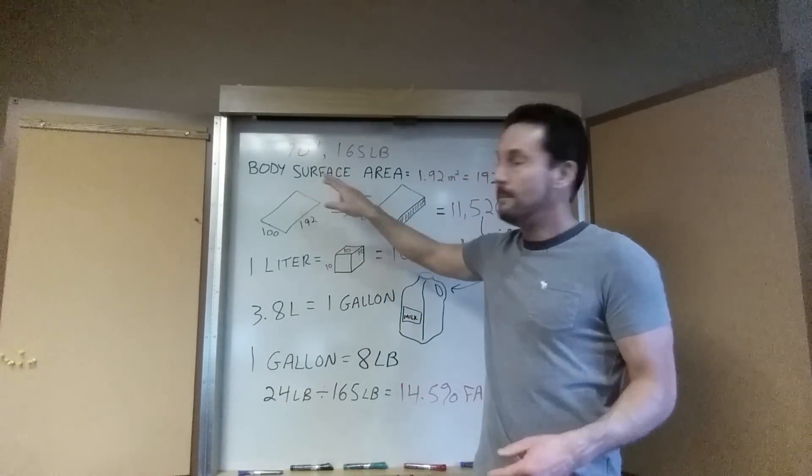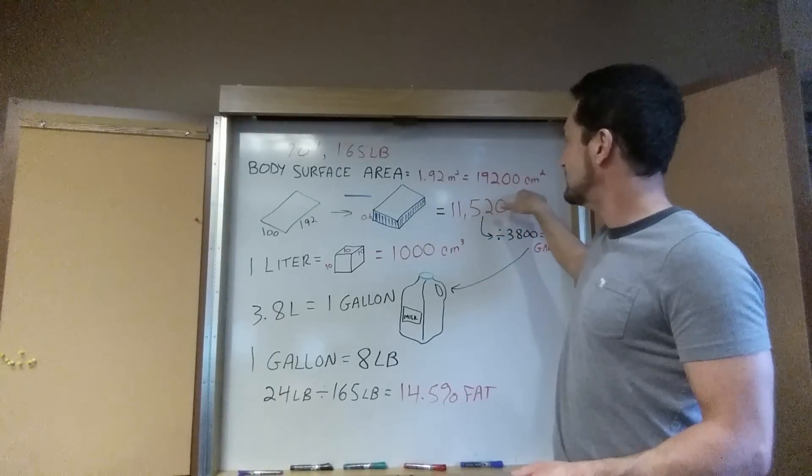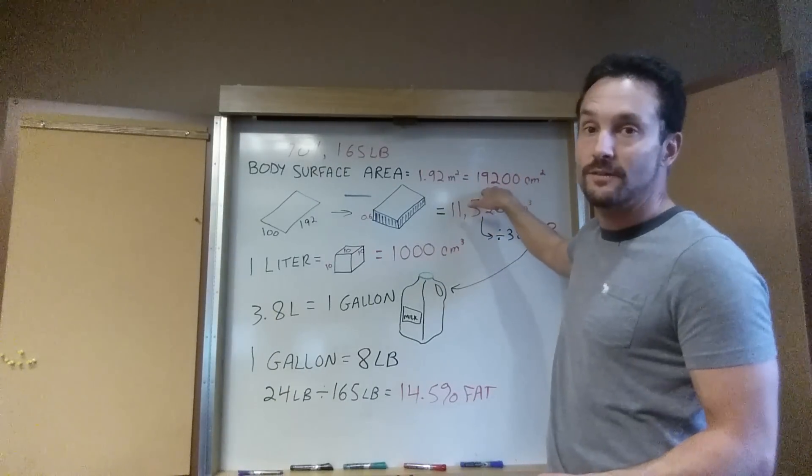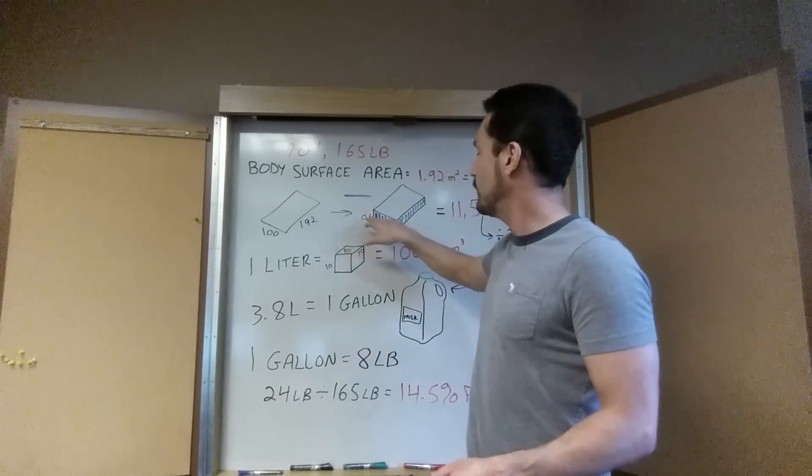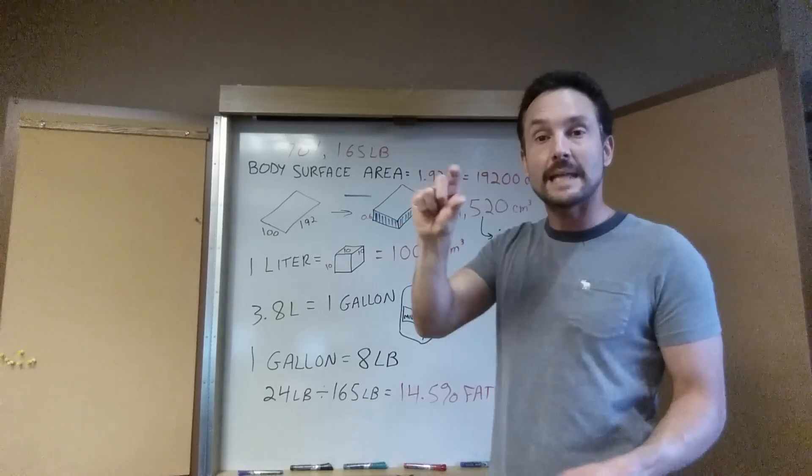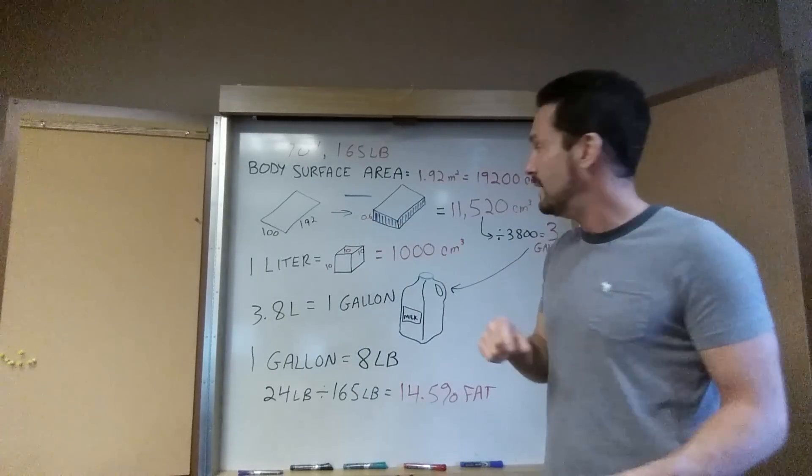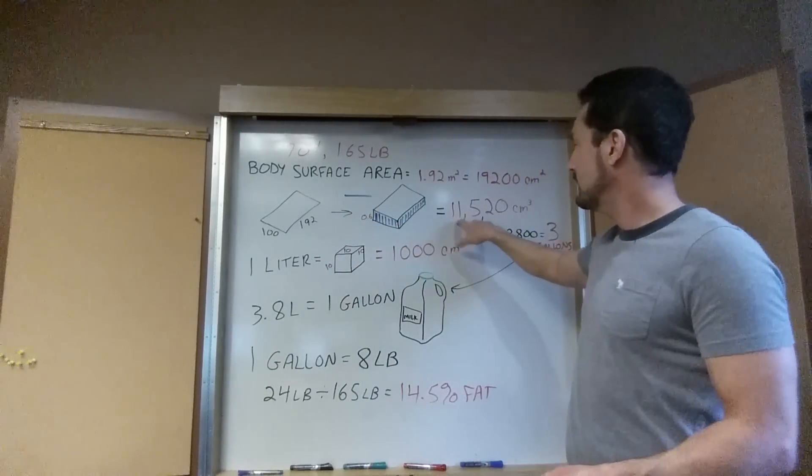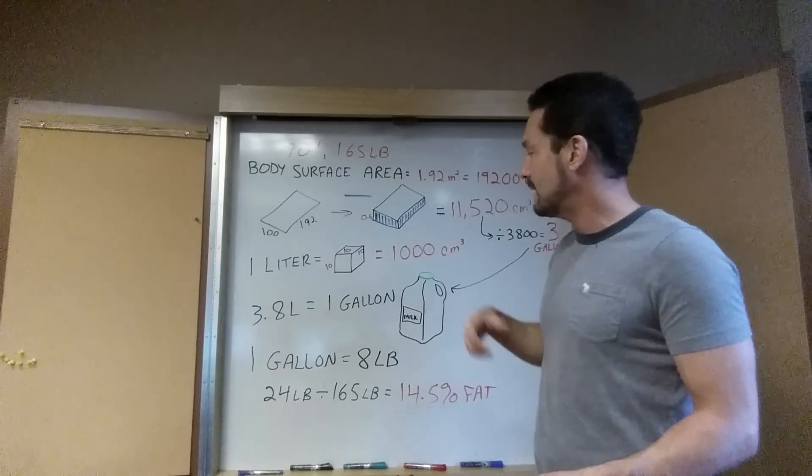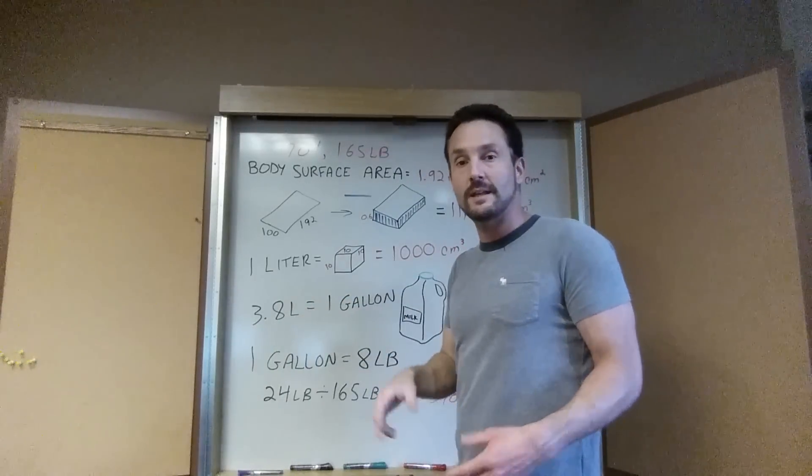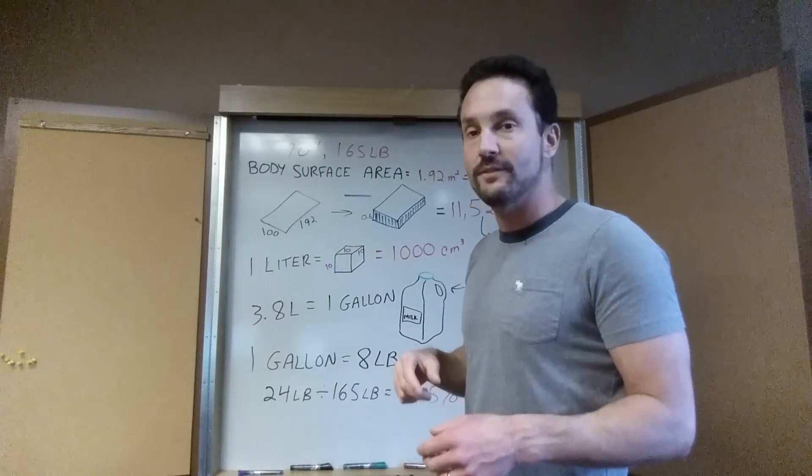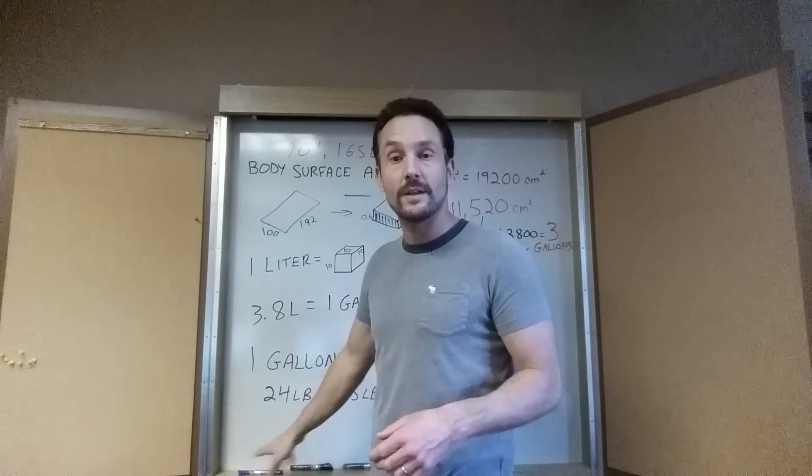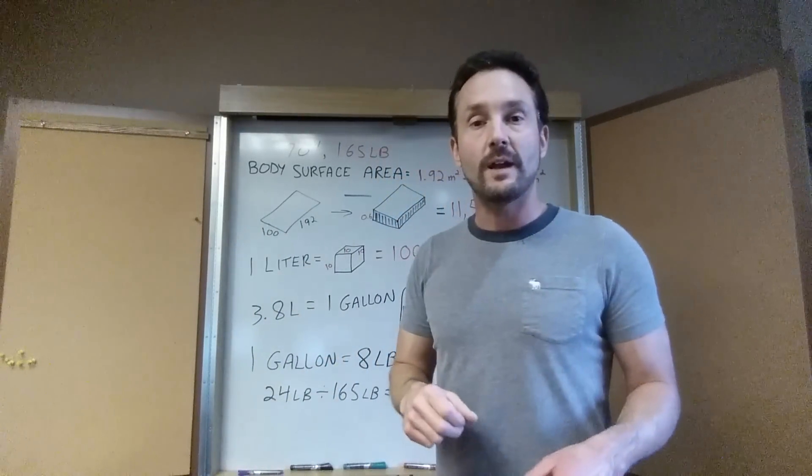So figure out your body surface area, turn it into centimeters so it should be in the tens of thousands. Multiply it by how many ever centimeters you decided you were thick and that comes up with your liters of volume and then again divide by 3.8 and that tells you how many gallons of fat you have and then you can find out how many pounds that is and then divide that into your weight for your body fat area.